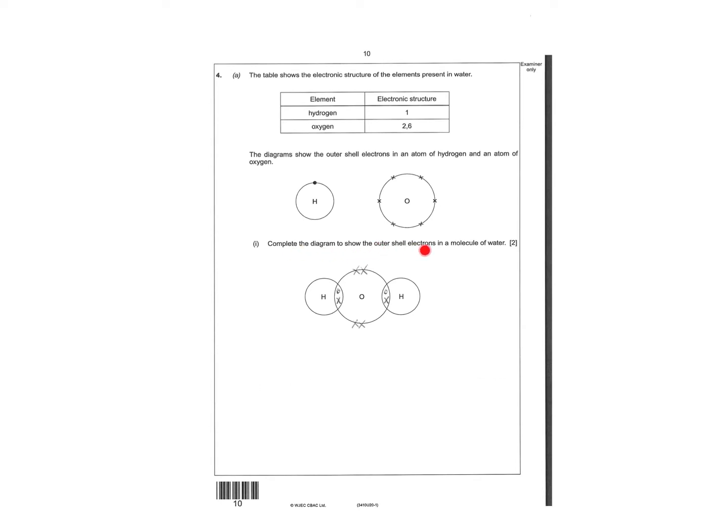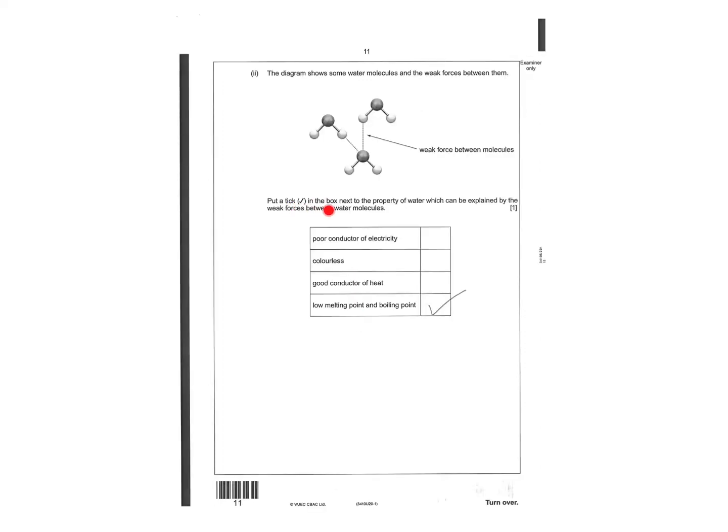Complete the diagram to show the outer shell electrons in the molecule of water. You can see there that hydrogen is going to bond to one oxygen, that hydrogen is going to bond to one oxygen, and then you've got two electrons either side. Put a tick in the box next to the property of water which can be explained by the weak forces in water molecules with low melting and boiling points.